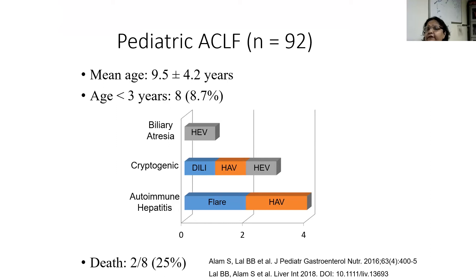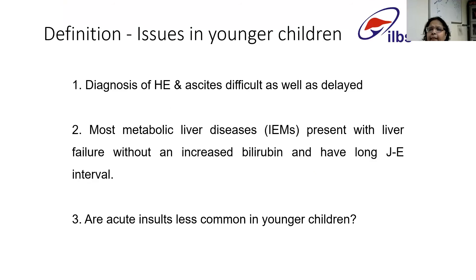As far as pediatric ACLF is concerned, children less than three years are just 8.7% of the complete cohort, even though death is almost 25% in these cases. Why we don't have enough younger children in the ACLF cohort needs to be understood. The various issues with younger children could be that we are not able to diagnose hepatic encephalopathy and ascites in the required time period. Most younger children have metabolic liver disease, and may have liver failure without increased bilirubin. They may also have very prolonged jaundice-to-encephalopathy intervals. Additionally, the acute insults are less common in younger children.